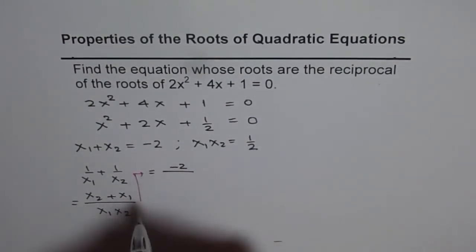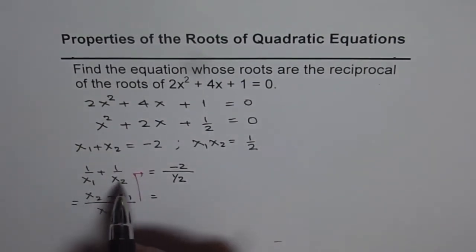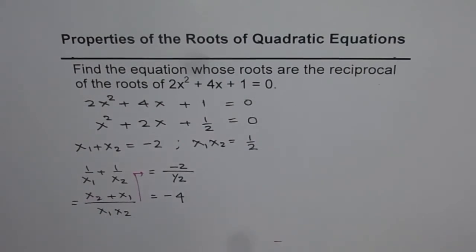So this is equal to x₁ + x₂ is -2 over their product, which is 1/2, so we write 1/2 here. So we get the reciprocal sum is actually equal to -4.